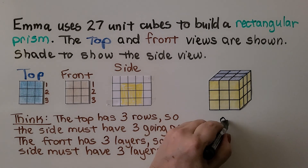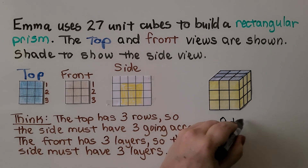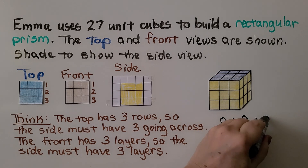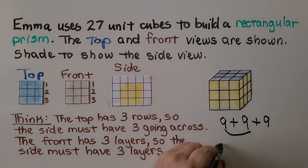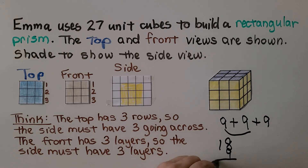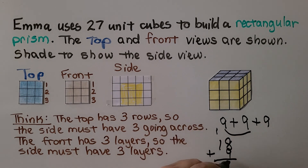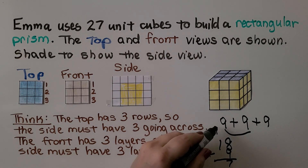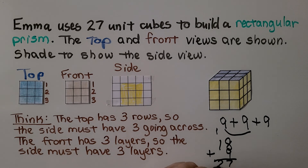The prism would look like this. We've got nine on the top, three layers in the front, and the side has three and three. That's nine plus nine plus nine. Nine plus nine is eighteen, plus nine more. Eight plus nine is seventeen — regroup the ten and put the seven down, and ten plus ten is twenty. It's twenty-seven, just like it says. We have three nines equal to twenty-seven.